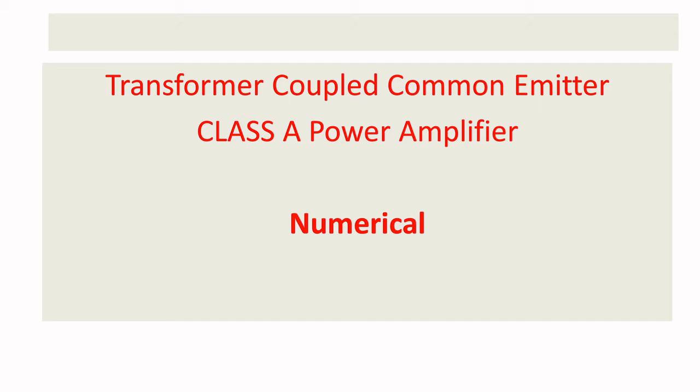By using transformer coupled section in the collector, I can improve the efficiency in the class A power amplifier up to 50 percent theoretically. But practically, there will be variation from 32 to 46 percent. So, we will go to the problem.